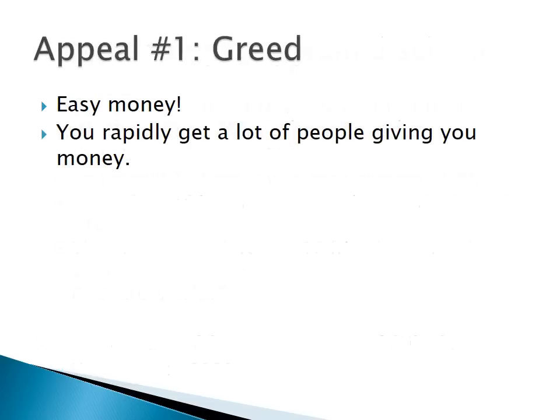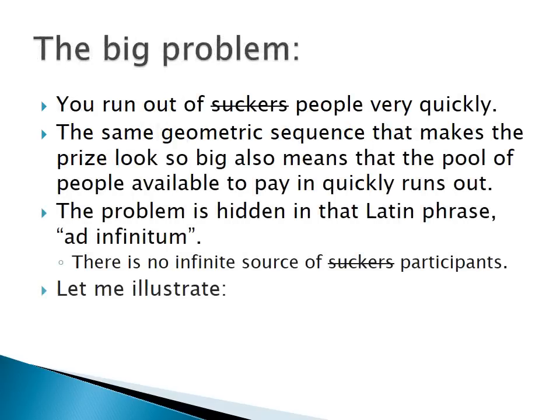Let's look at the first appeal: easy money — it seems like pure greed, where you can rapidly get a lot of people giving you money. But the big problem is you run out of participants very quickly. Notice what we have is a geometric sequence — a number that you're multiplying by 10 over and over again. The same geometric sequence that makes the prize look so big also means the number of people available to pay in quickly runs out.